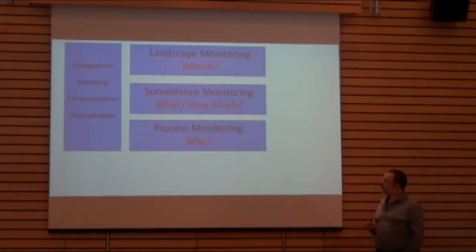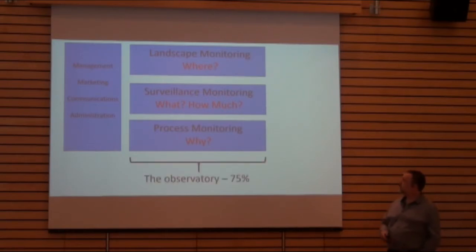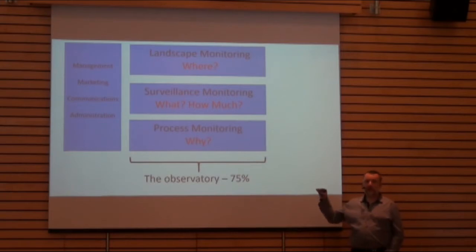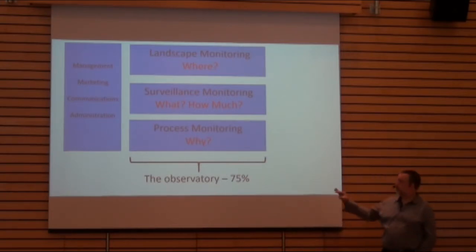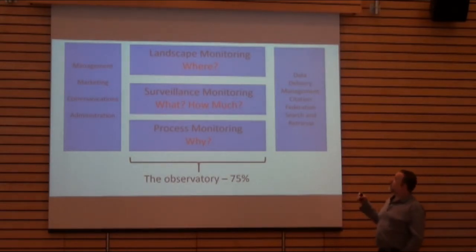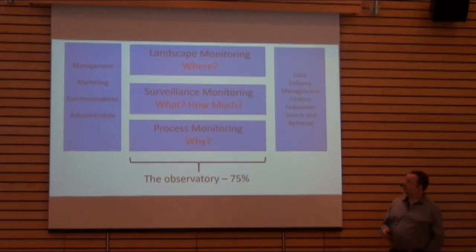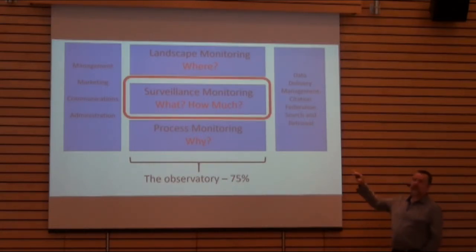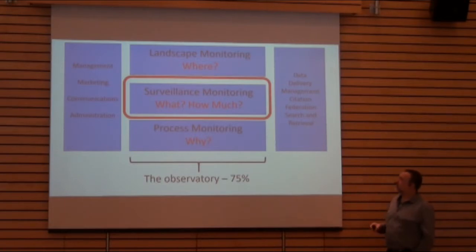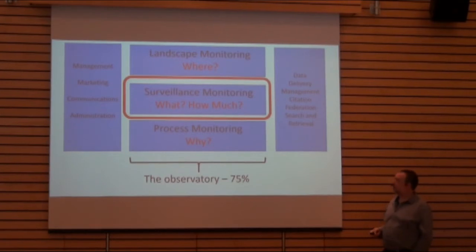There's also a process monitoring component, which gets down to cause and effect — the 'why' certain things are happening in the environment. Those three components make our observatory component, and 75% of the funding and resourcing goes to the actual on-ground action. The last component is integrated data delivery, management, citation, federation, search, and retrieval — everything about making the data we collect widely and easily available to the public and the global community. My real strength is the surveillance monitoring component.